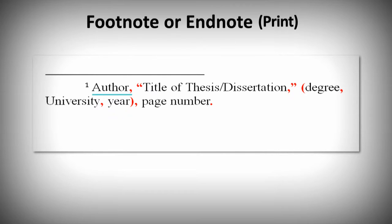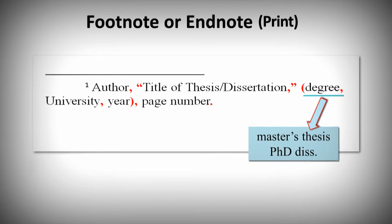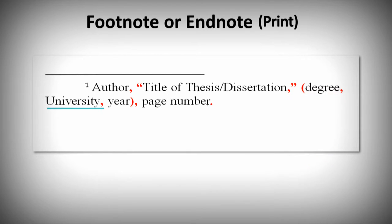In your note, start with the author's name followed by a comma. Then, in quotation marks, the title of the thesis or dissertation followed by a comma. In brackets, indicate the type of degree — for example, a master's thesis or PhD — and the abbreviation for dissertation, and the university, and the year it was completed.